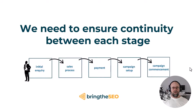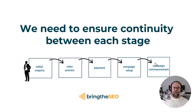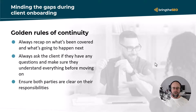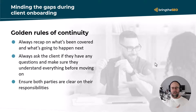So what's the solution? We need to ensure continuity between each stage — no gaps in between — so that the prospect or client moves through each stage in a smooth, timely, efficient manner. Here are the golden rules of continuity. Firstly, always recap on what's been covered and what's going to happen next. The client should not only know what's going to happen next, but it's always worthwhile recapping what you've just covered.